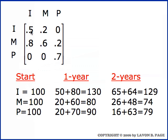Fifty percent of the immatures survive, so fifty percent of a hundred gives us fifty from that group that survive to the end of the year. And the one hundred mature individuals produce eighty new births during the year, so fifty plus eighty is one hundred and thirty immatures at the end of the year.